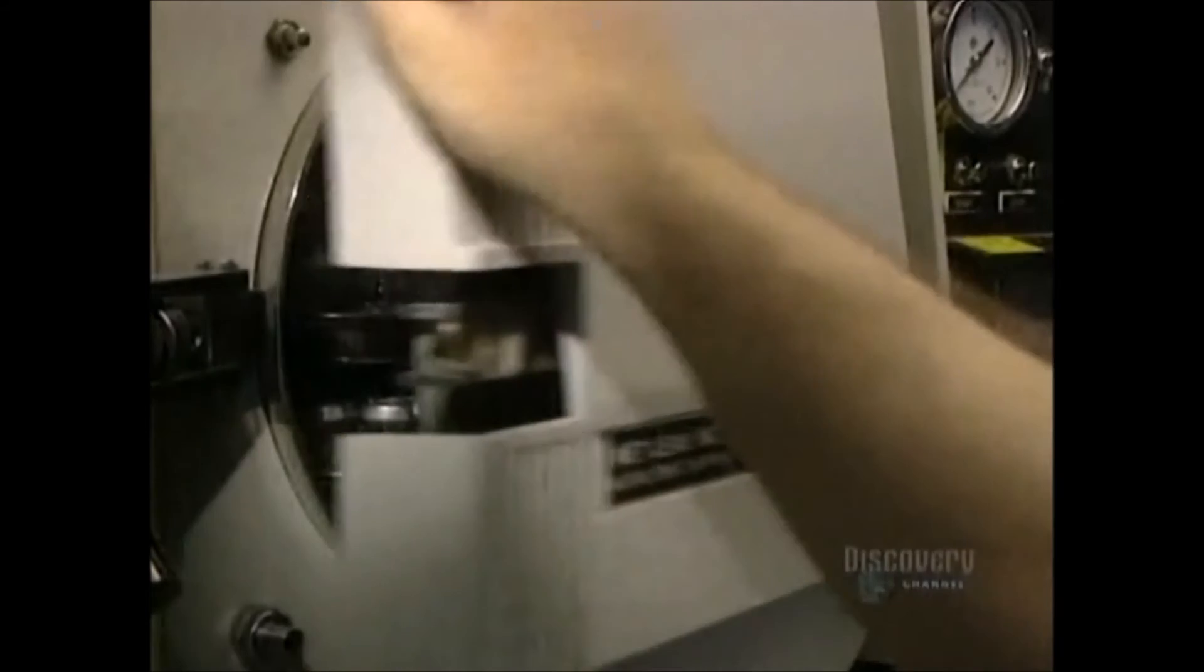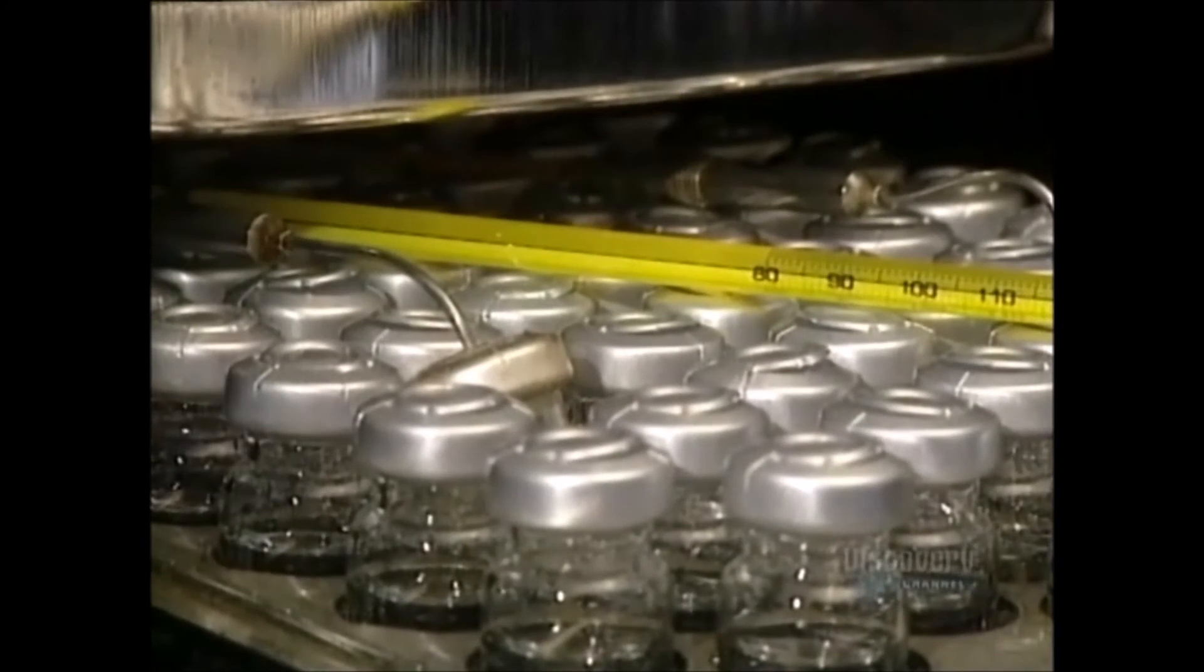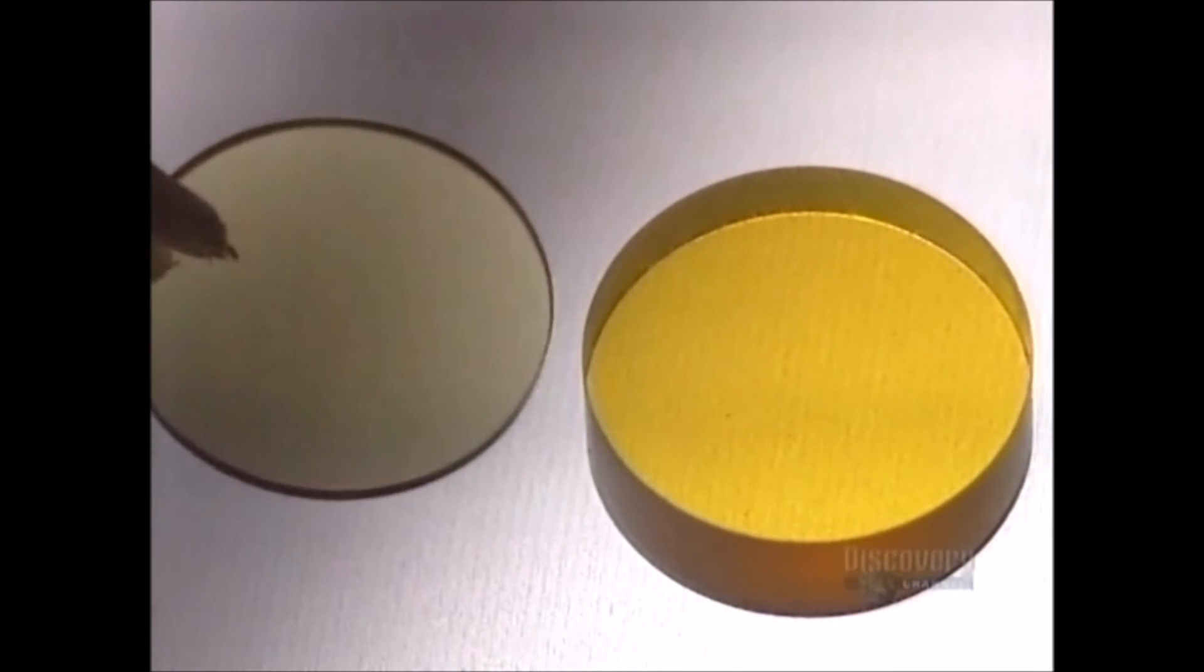These vials are placed in a sterilizer at a temperature of 121 degrees centigrade for an hour and a half. The contents will remain sterile for a period of up to seven years if not opened.